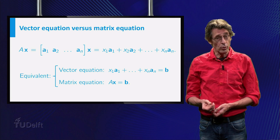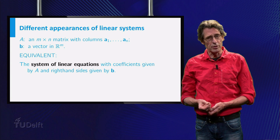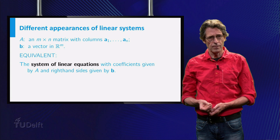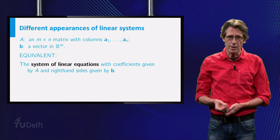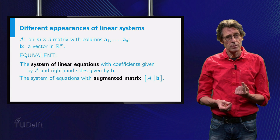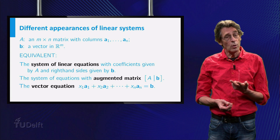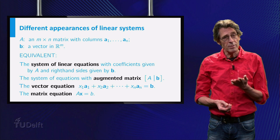So now we have four ways to write down a system of linear equations with coefficient matrix A. Apart from the system as it is, we can use the augmented matrix, we can consider it as a vector equation, or we can write it as a matrix equation.